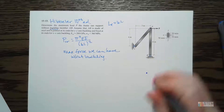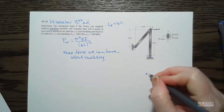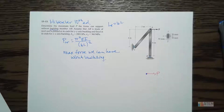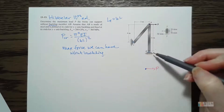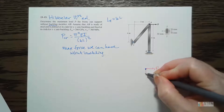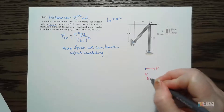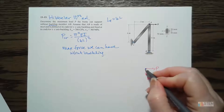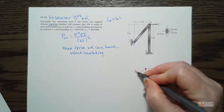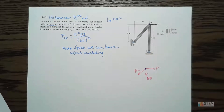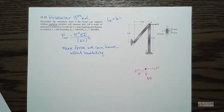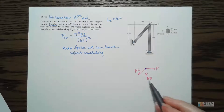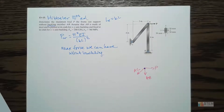At joint A we have our forces: the applied force P, member AC, and member AB. I always draw my forces going out of the joint - that way it's easy to tell if it's in tension or compression. If we get a negative answer, it's in compression; positive means tension. So we've got three forces at joint A.